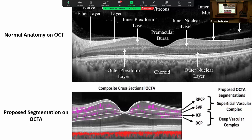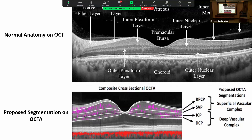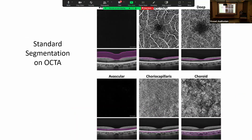Let's review normal anatomy. The picture on the top is just a standard OCT showing the different layers of the retina. On the bottom, you've got the cross-sectional OCTA showing the different capillary plexuses of the retina. You've got the RPCP — the radial peripapillary capillary plexus — and the superficial vascular plexus, which is in the RNFL and ganglion cell layer. Then the intermediate and deep capillary plexi are straddling the INL. OCTA segments this into a superficial vascular complex and a deep vascular complex. It also produces an avascular segment for the ONL, which is a watershed area — very important clinically for lesions like PAMM.